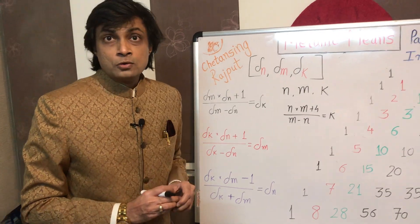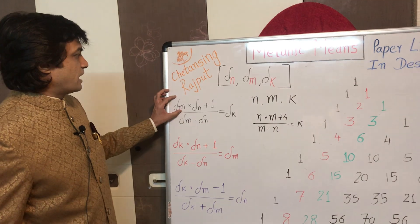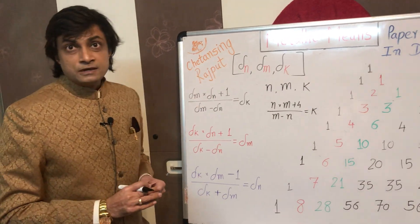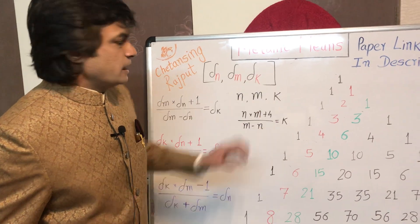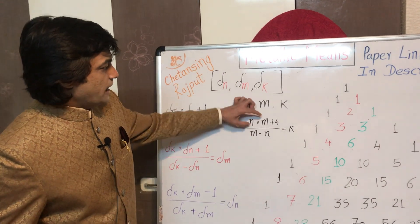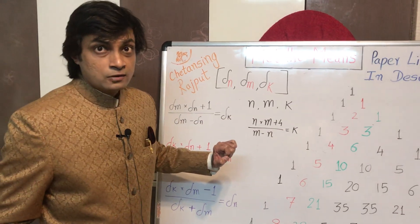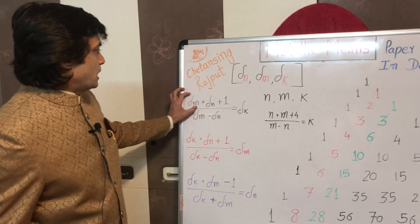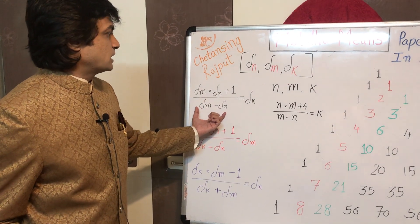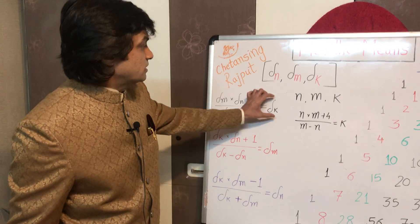Delta is the symbol for metallic ratio. Delta 1 is the golden ratio, delta 2 is the silver ratio, delta 3 is the bronze ratio, and delta m is the m-th metallic mean. So n, m, k are any three positive integers satisfying the prerequisite: n times m plus 4 upon m minus n equals k. Then the product of the m-th and n-th metallic mean plus 1, upon the difference between them, gives the precise value of the k-th metallic ratio.